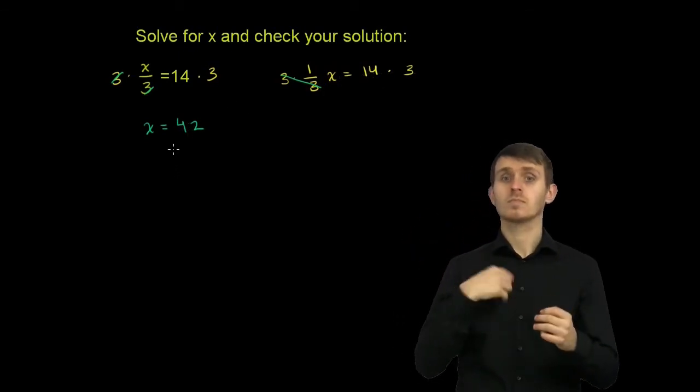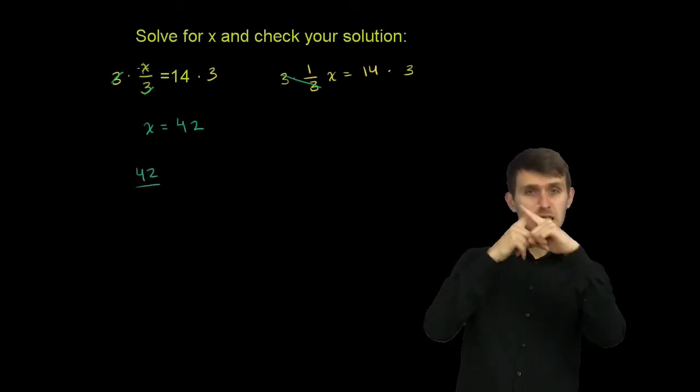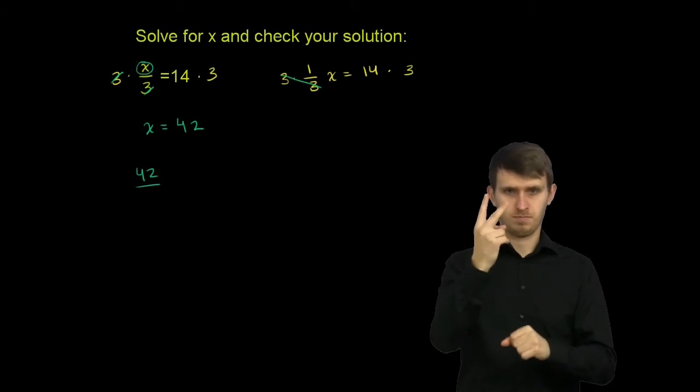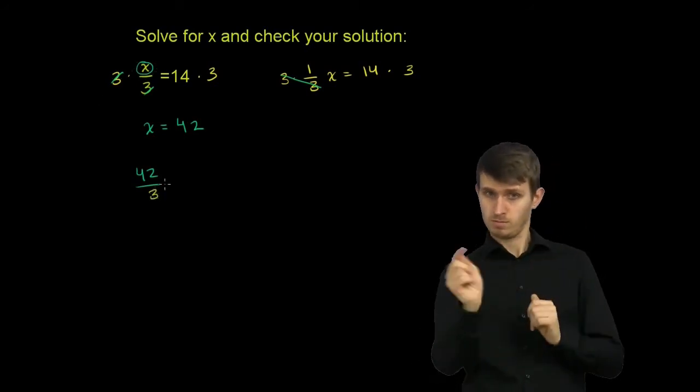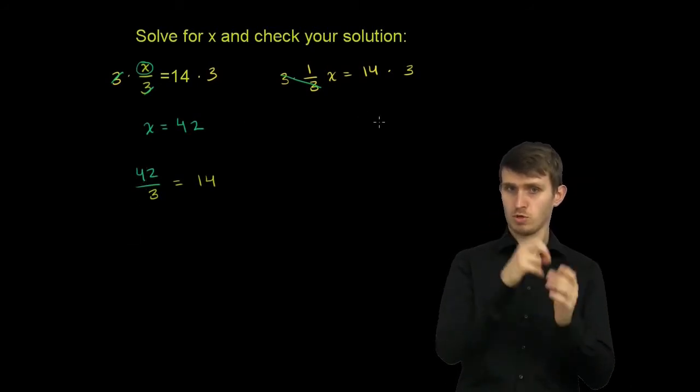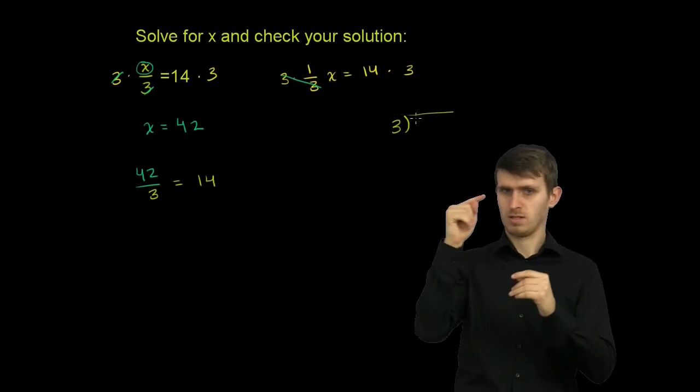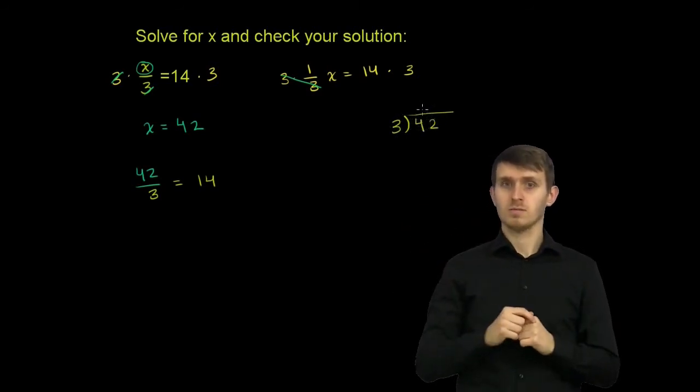Now let's just check our answer. Let's substitute 42 into our original equation. So we have 42 in place for x over 3 is equal to 14. So what's 42 divided by 3? And we could do a little bit of medium-long division. It's not really long division. 3 into 4.